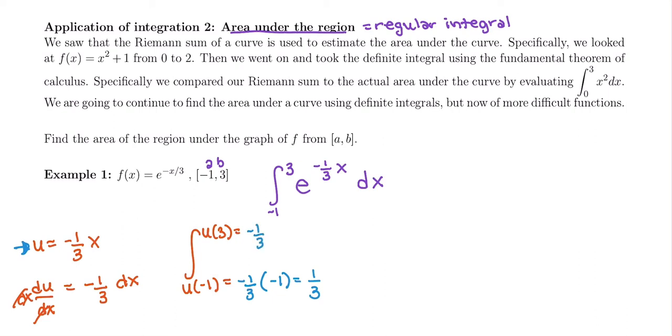And negative one-third times 3 is negative 1. It's a little strange that our new lower bound one-third is actually higher than our new upper bound at negative 1, but we're just going to roll with it. We're going to evaluate from one-third to negative 1.